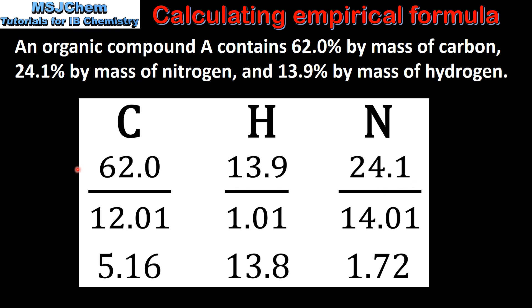The next step is to divide the mass in grams by the relative atomic mass. So for carbon, that's 62 divided by 12.01. For hydrogen, it's 13.9 divided by 1.01, and for nitrogen, it's 24.1 divided by 14.01. This gives us 5.16 moles of carbon, 13.8 moles of hydrogen, and 1.72 moles of nitrogen.